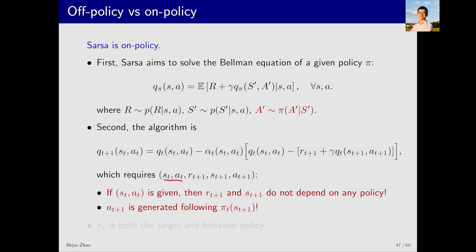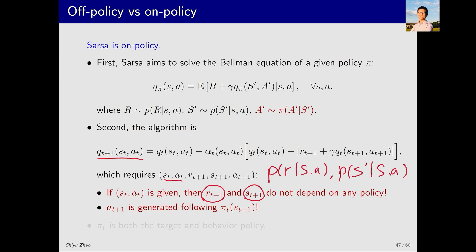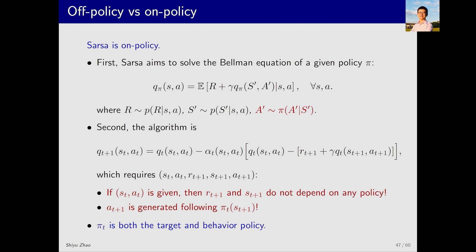When s_t and a_t are given — meaning we are updating the Q value of (s_t, a_t) — the subsequent r_{t+1} and s_{t+1} are independent of any policy; they are determined by the probabilities p(r|s,a) and p(s'|s,a). However, the fifth term a_{t+1} is policy-dependent: it is an action sampled from policy pi at state s_{t+1}. Thus pi_t is the behavior policy. Since SARSA estimates the action value of pi_t and uses it to update pi_t, pi_t is both the behavior and target policy — making it on-policy.